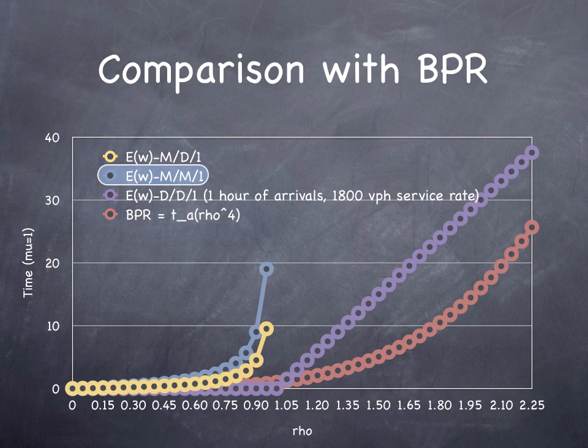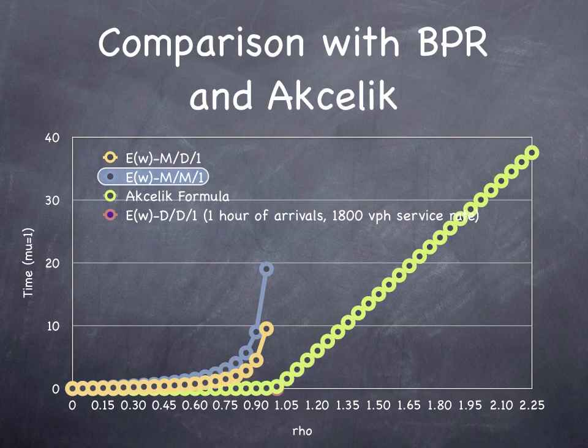Basically, it's the free flow time times the rho to some power. 4 is widely used for freeway systems. Obviously, you want it to be somewhere in between these, so there's been some development of alternative equations.